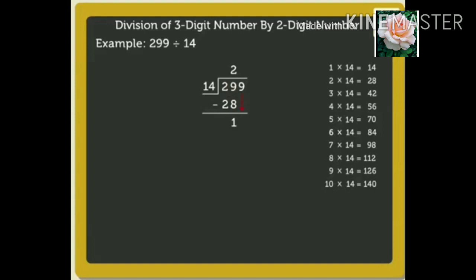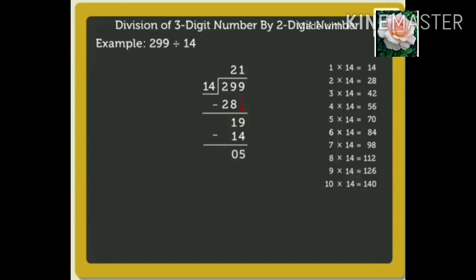Now, we compare 19 and 14 again. Here, 19 is greater than 14, so we can divide 19 by 14. The nearest product is 14. So, we write 1 in the quotient above 9 in the ones place and 14 under 19. Next, subtract 14 from 19, which equals 5. So, here we get the quotient 21 and the remainder 5.